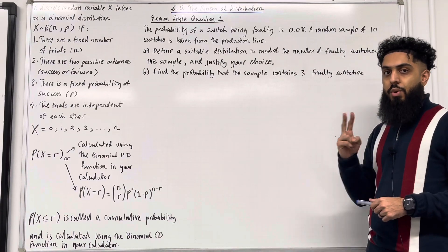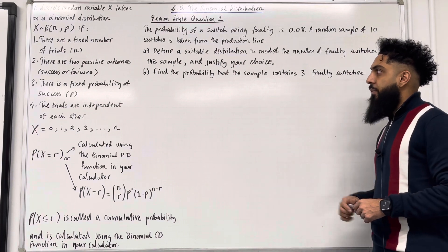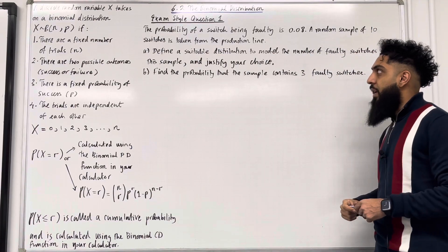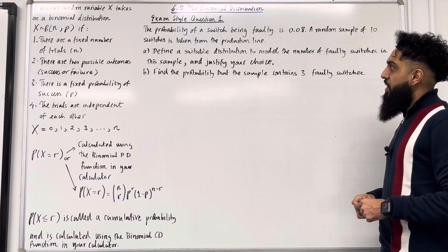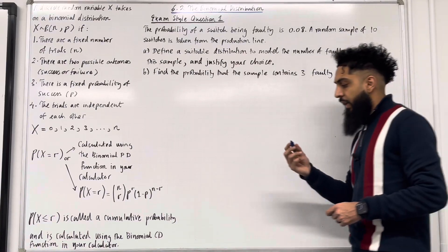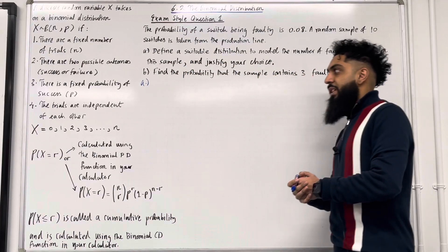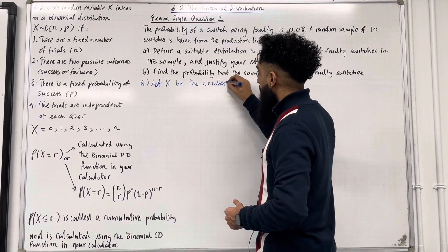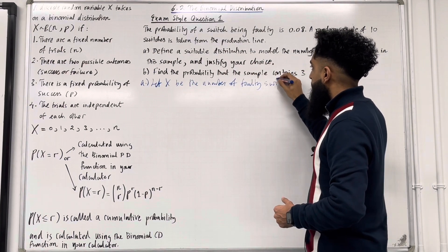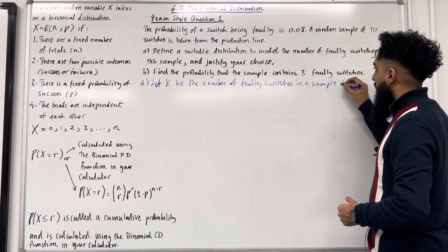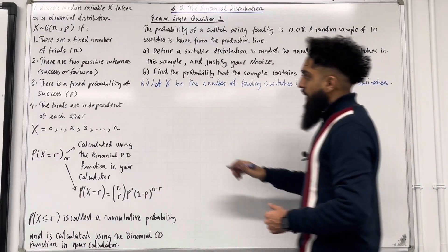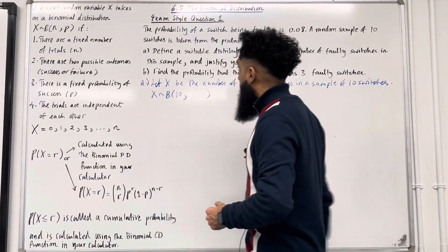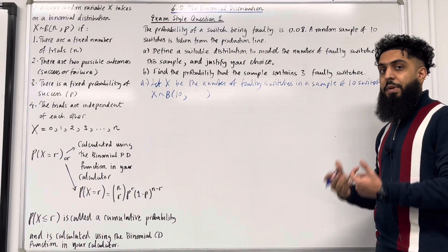Now I'm going to apply these key facts to two exam style questions. Here is exam style question one. The probability of a switch being faulty is 0.08. A random sample of 10 switches is taken from the production line. Part A: define a suitable distribution to model the number of faulty switches in this sample and justify your choice. Let X be the number of faulty switches in a sample of 10 switches. X takes on a binomial distribution with N equal to 10 and P equal to 0.08.